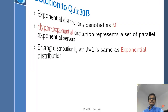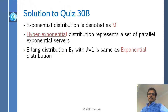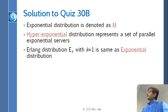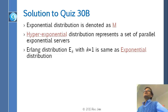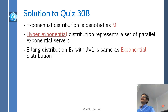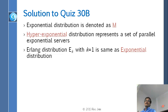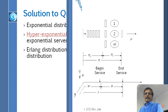Quiz answers: exponential distribution is denoted as M. Hyper-exponential is the one where you have parallelism — parallel exponential service. Erlang with K equal to 1 is the same as exponential. Similarly, H1 — hyper-exponential with one branch — is the same as exponential.